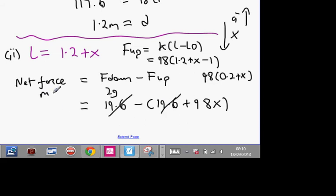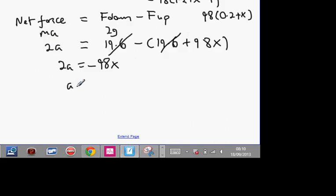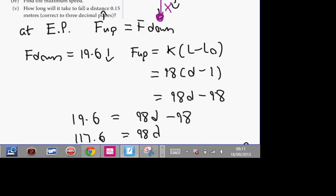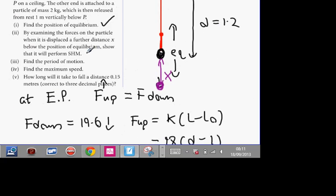The weight of the particle is MA, which is 2A. It's a mass of 2 kilograms. So 2A equals minus 9.8X, divided by 2, A equals minus 49X. A equals minus omega squared X. Omega squared equals 49. Omega therefore equals 7. So this system, for any extension X, has a constant omega of 7. Let's revisit our next question. Show that it'll form simple harmonic motion. Yes.